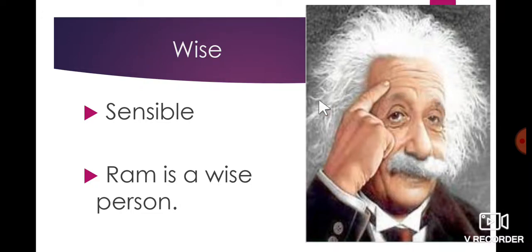Wise means sensible, intelligent. For example, Ram is a wise person. Ram is a very sensible person. See Einstein, this is the photo of Einstein. He is a very sensible person.